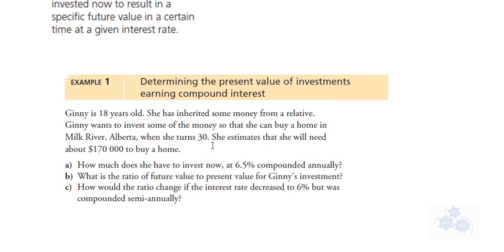Ginny is 18 years old. She's inherited some money from a relative. She wants to invest some of that money so that she can buy a home in Milk River, Alberta, when she turns 30. She estimates that she will need about $170,000 to buy a home.